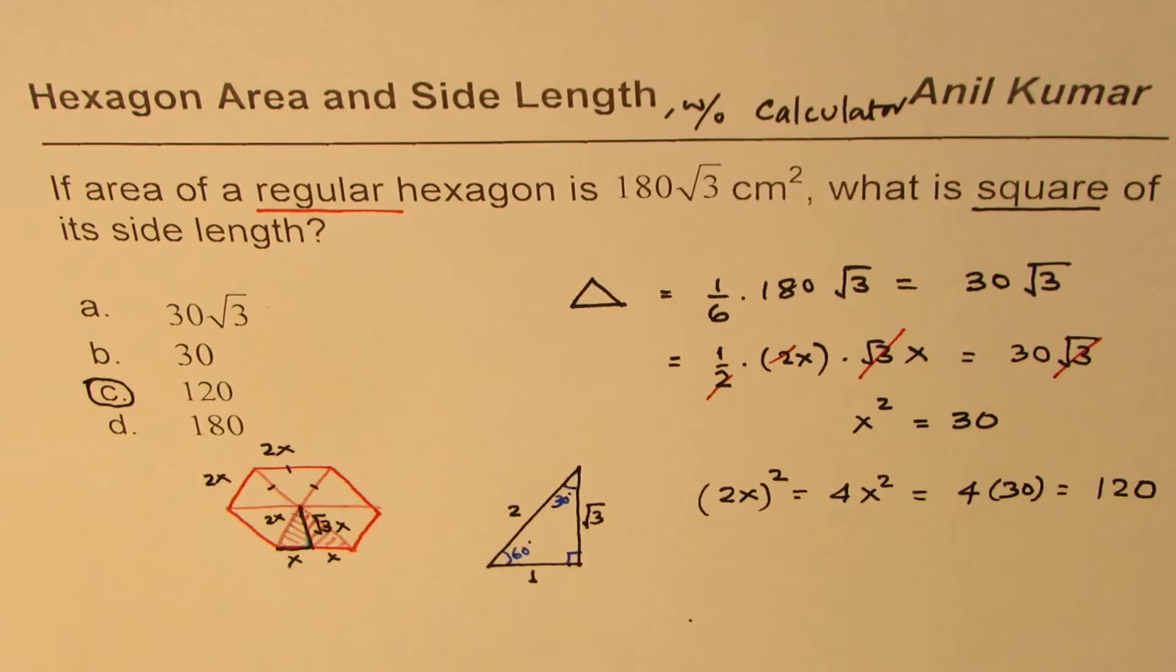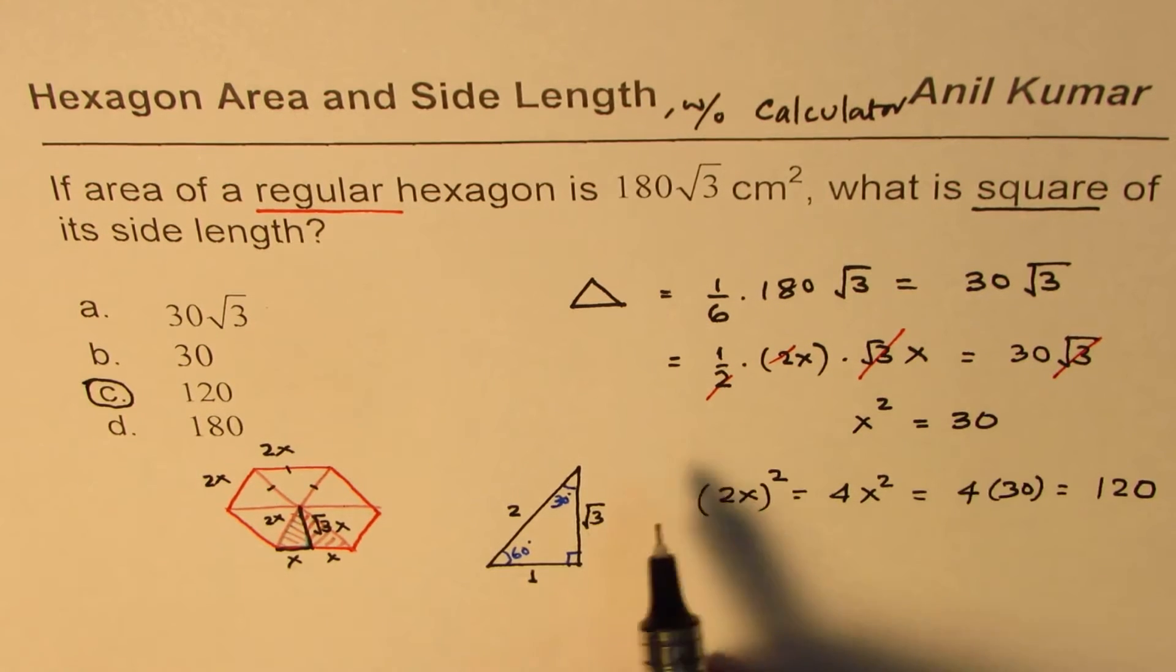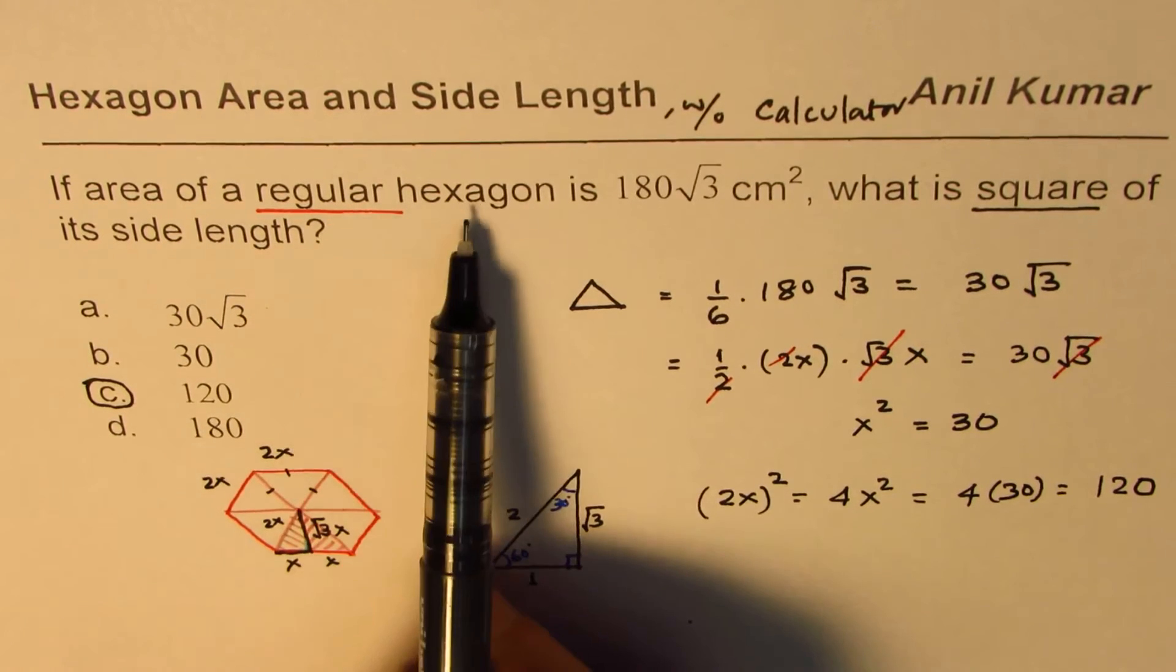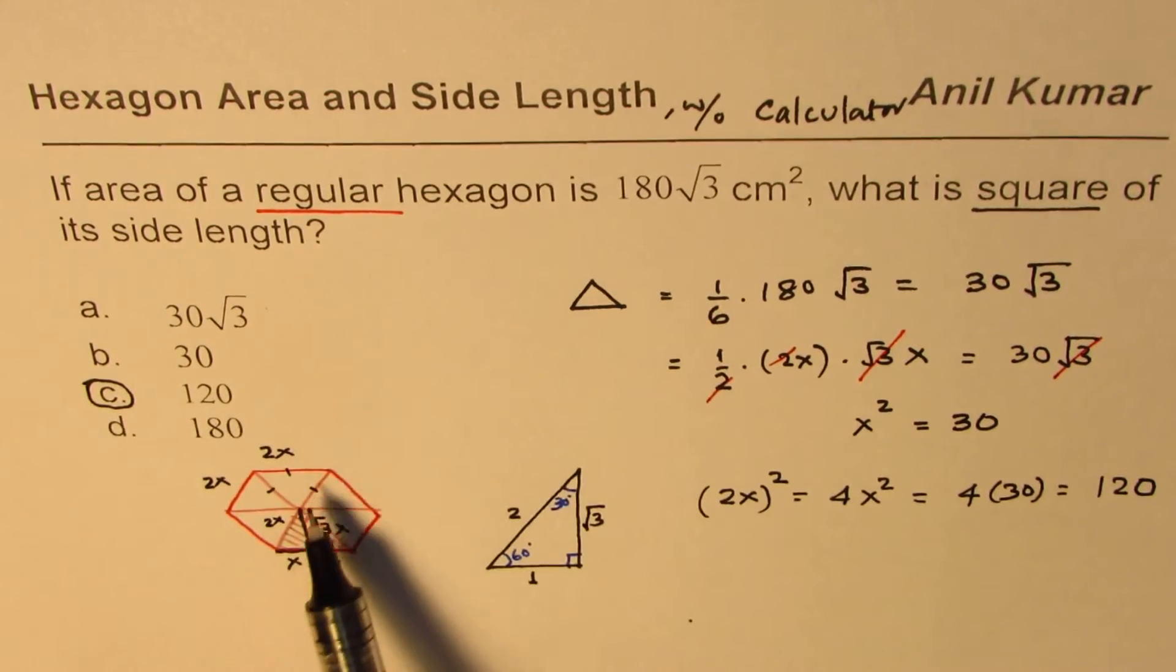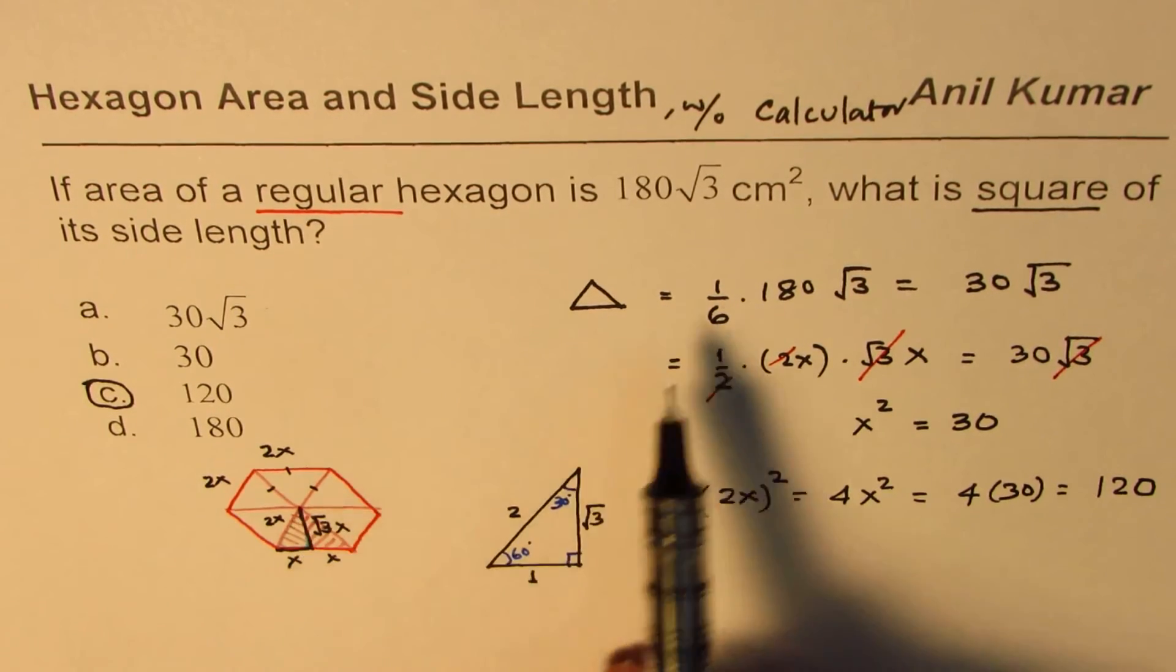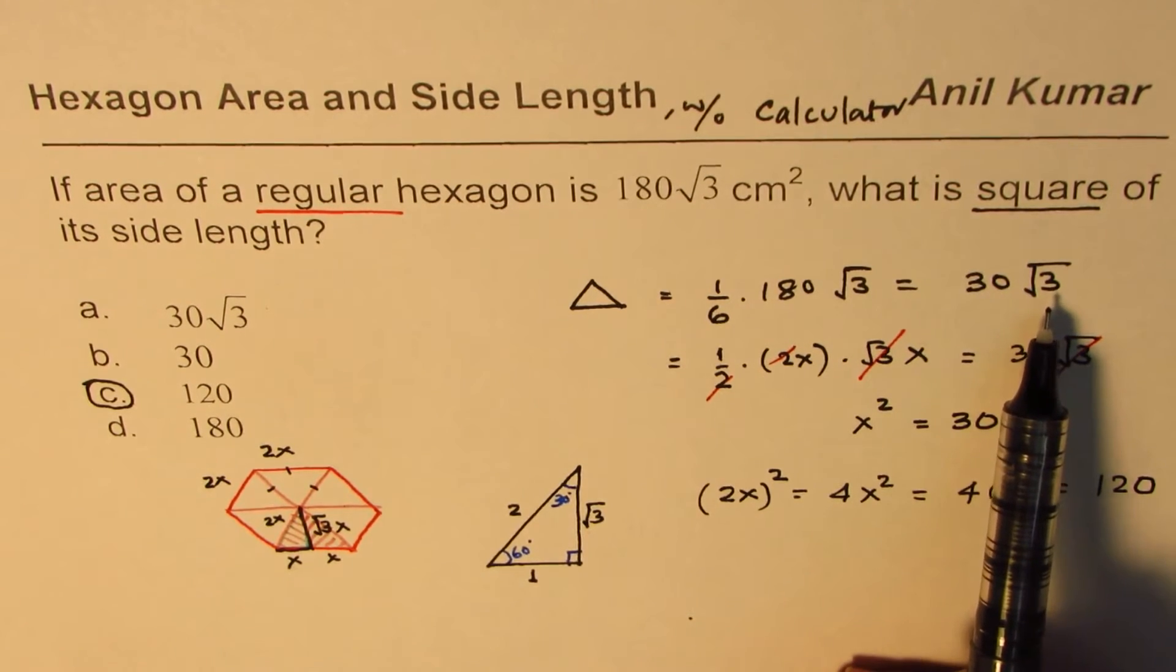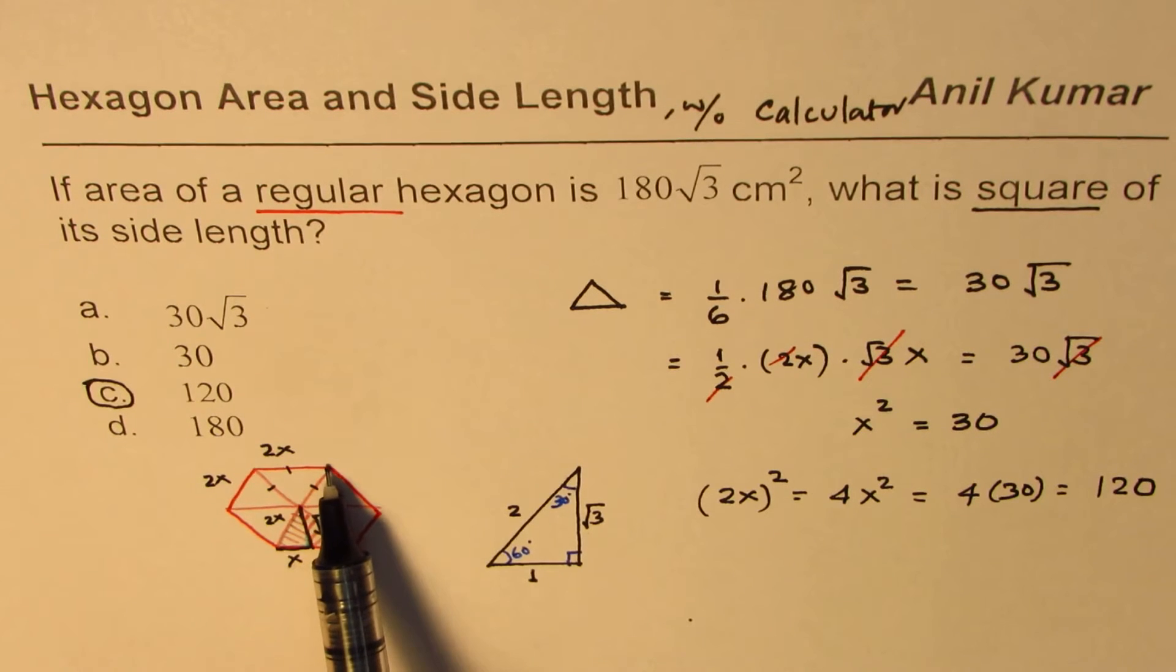I hope this concept is clear to you. So let's try to understand the method once again. You are given area of a regular hexagon, so area of each triangle will be 1/6 of this area, which is 30 square root 3 individually. If side length is 2x, then the height of this triangle will be square root 3x.